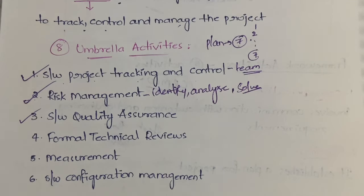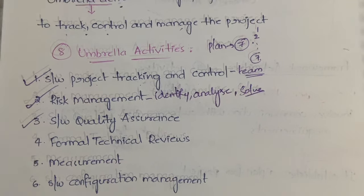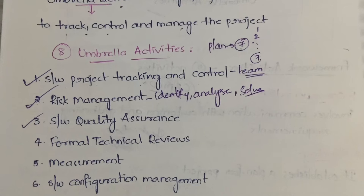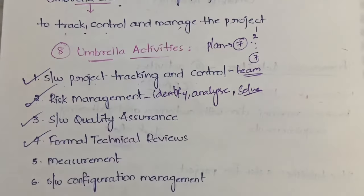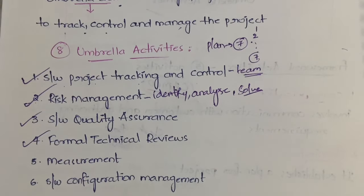Next is formal technical reviews. I explained this in the fifth chapter as well. In formal technical reviews, a group of people sit together and discuss things happening in the project — any modifications to be done and so on. It is essentially a review process, and a detailed video is available in the fifth chapter.